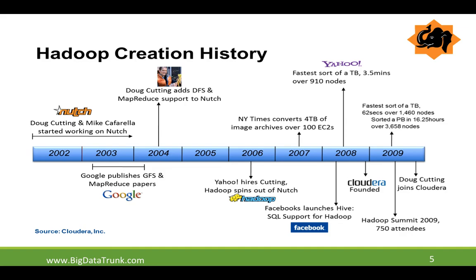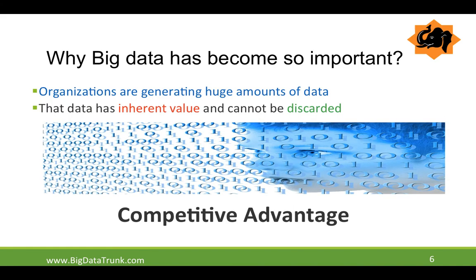That changed when Cloudera saw this as an opportunity and came forward to provide support as a service. This was a welcome change for enterprises, and several other companies joined the big data revolution after that. Almost every single company nowadays has some kind of big data project or proof of concept being done. After the initial seed of Google's white paper, Cloudera's entry is a very critical item on this roadmap, and that's why the world sees it as the main change, making us feel big data just started a few years back.